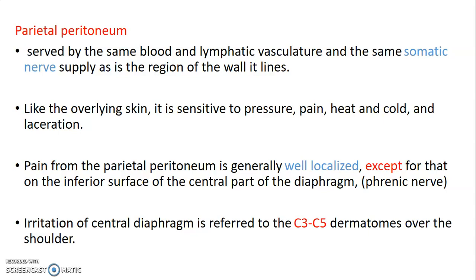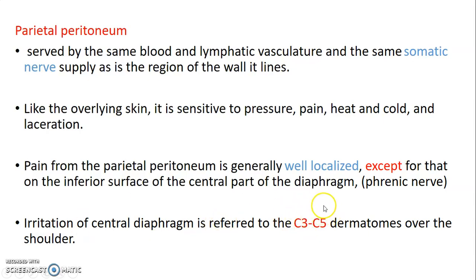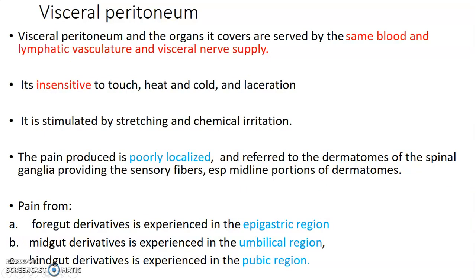Pain from the parietal peritoneum, since it has somatic innervation, is actually localized, except for the inferior part of the central diaphragm which is innervated by the phrenic nerve. So irritation of the central diaphragm, as discussed in the thoracic diaphragm lecture series, causes referred pain to the shoulder, which receives C3 to C5 dermatomes.